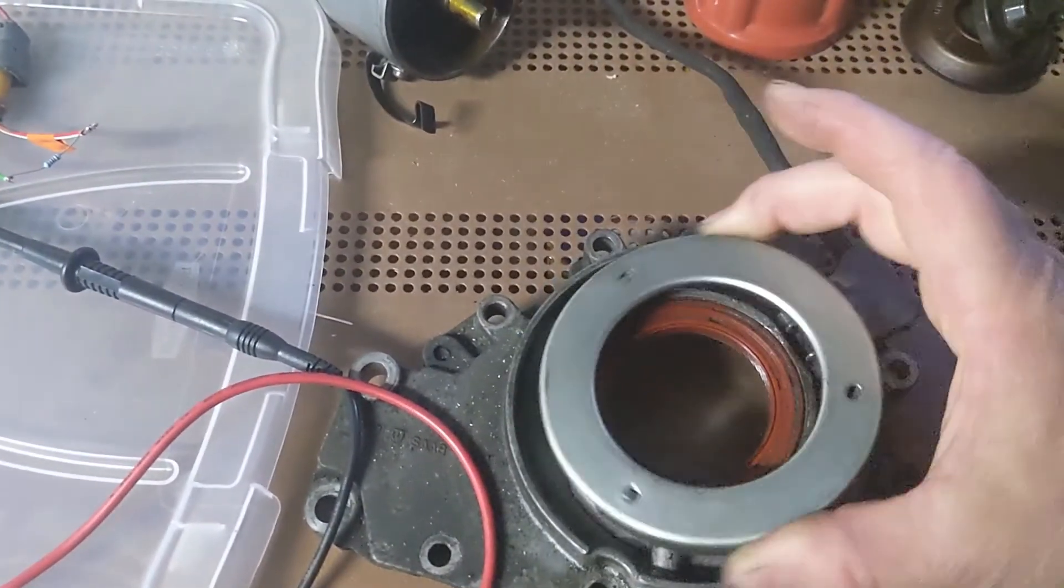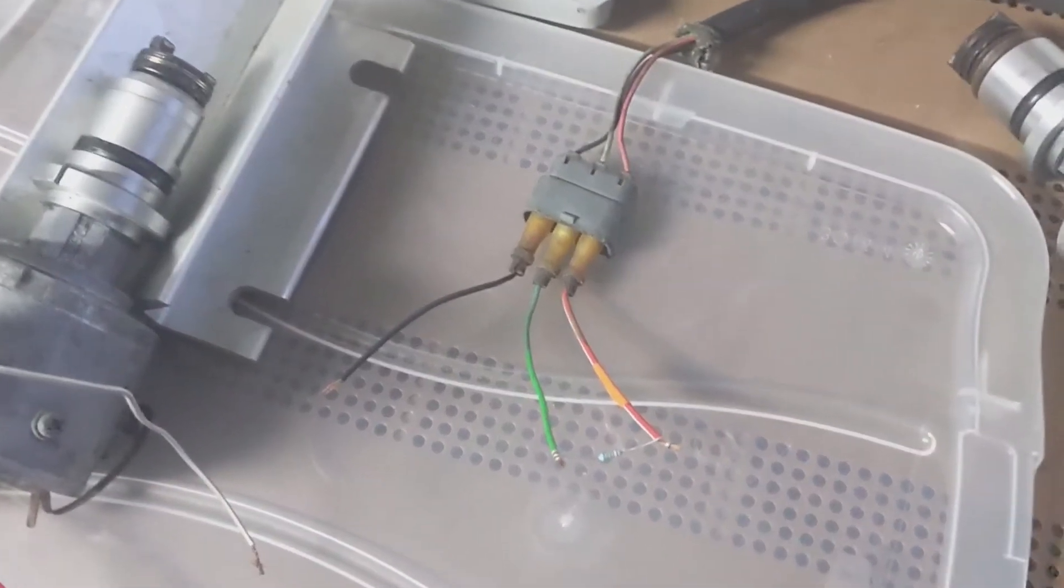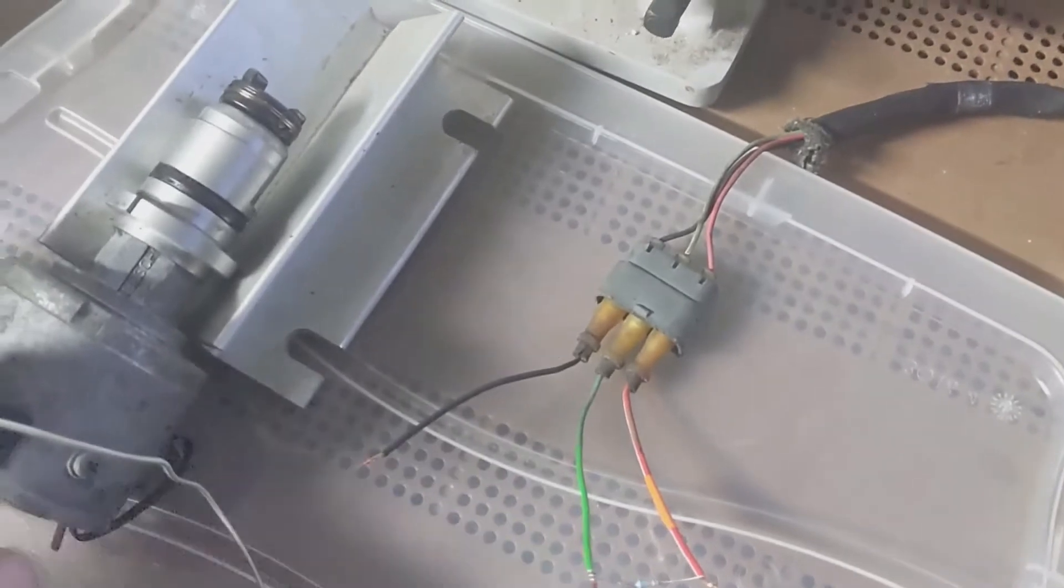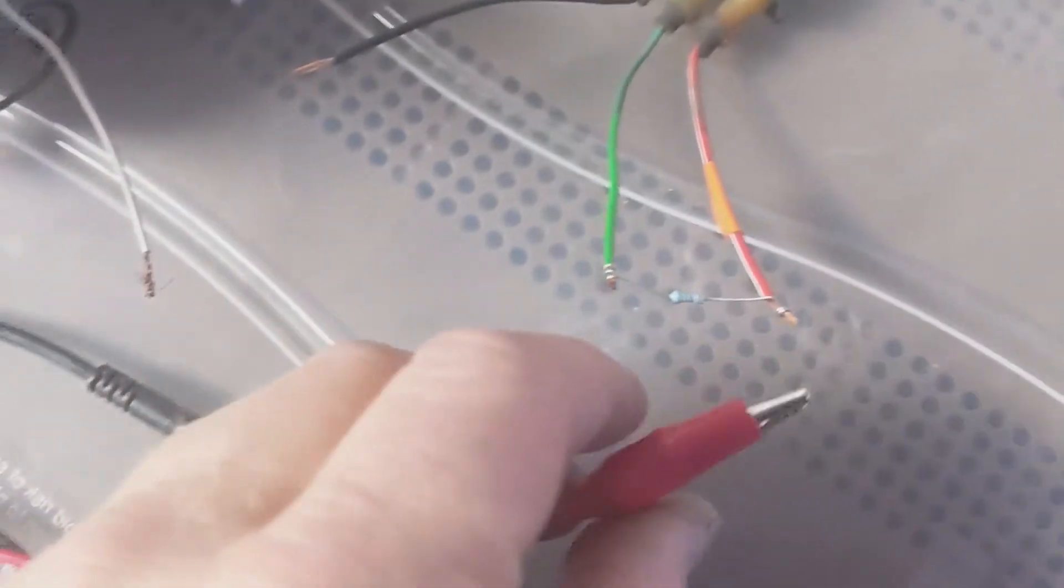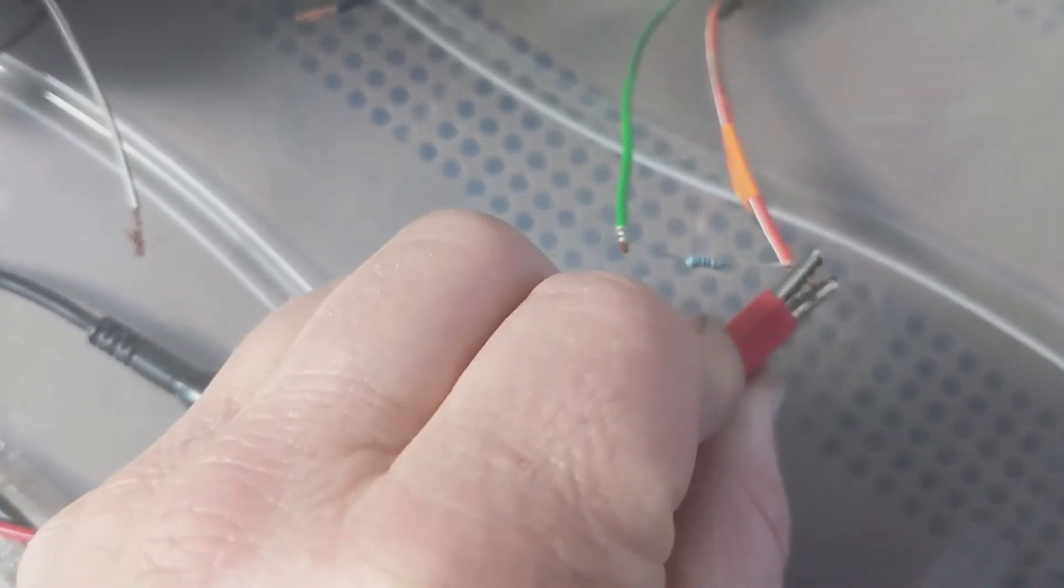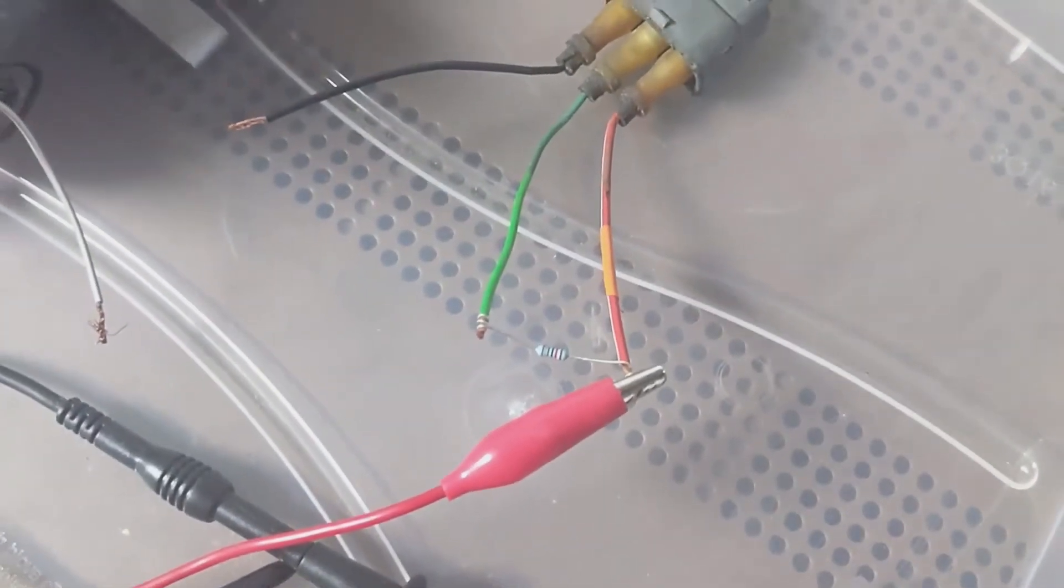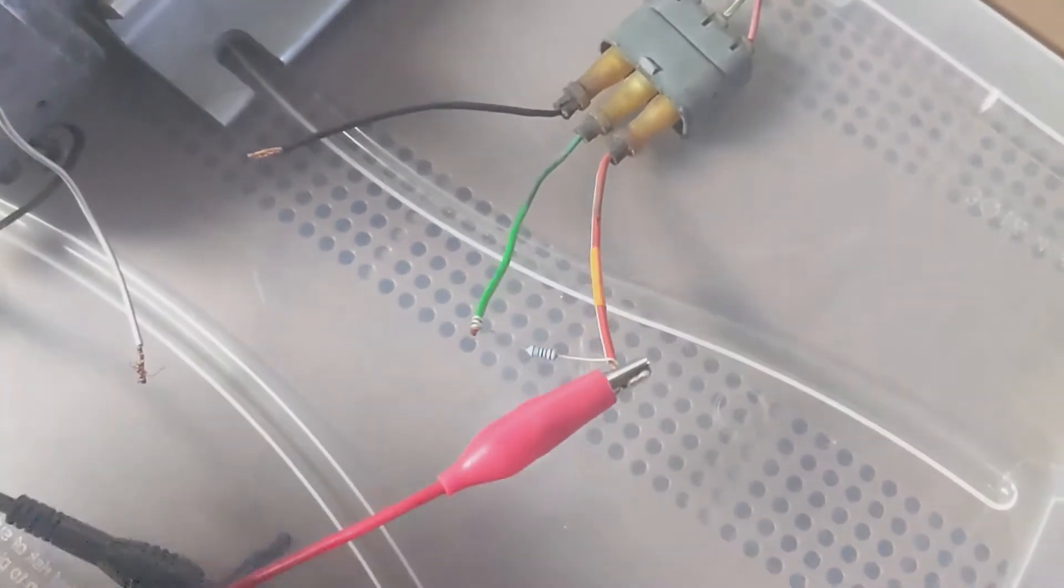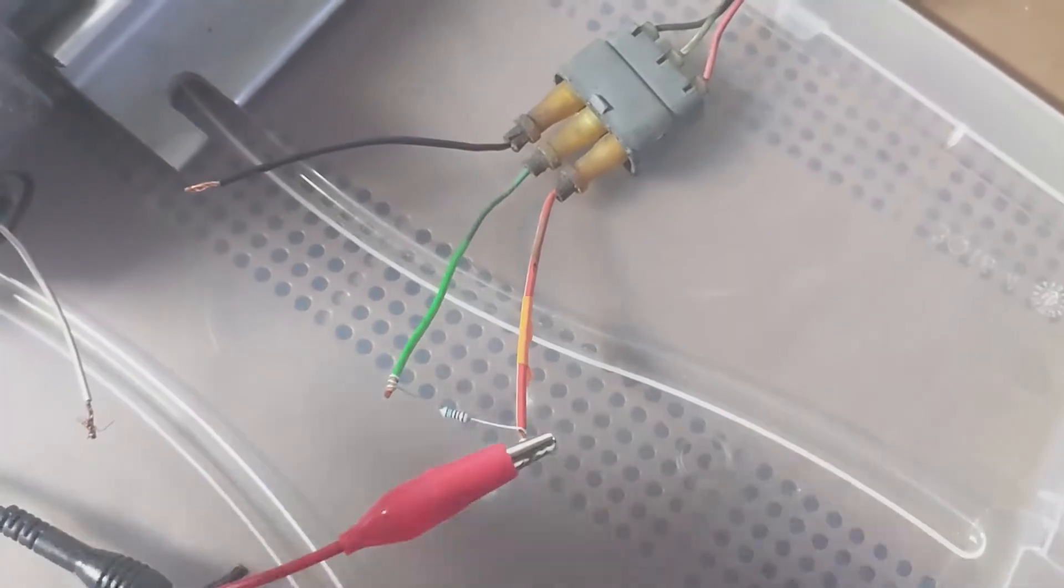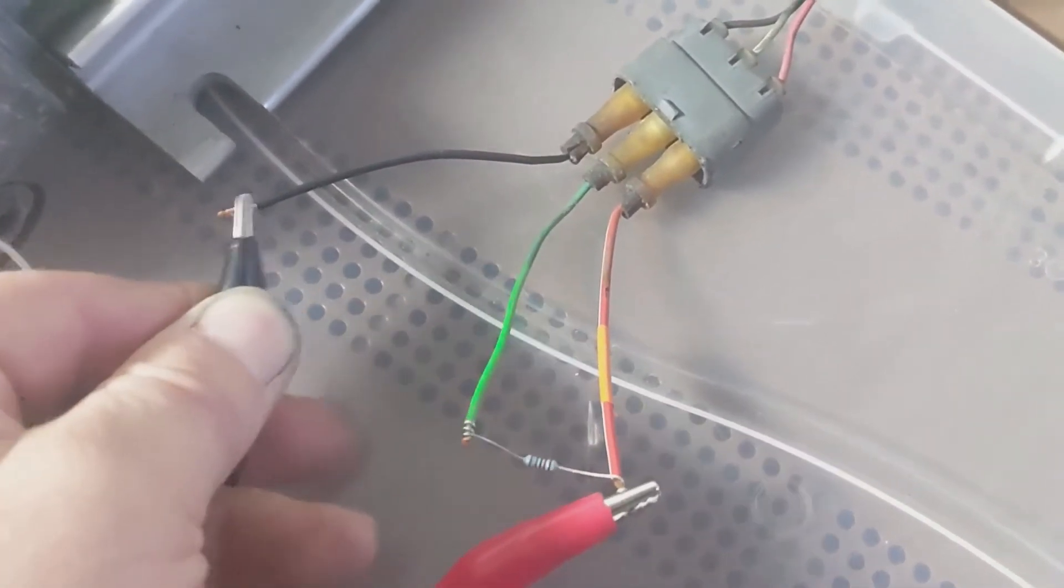So I'm going to just go ahead and set this guy right like that so it's blocking my Hall sensor. I'm going to grab my positive lead from the regulated power supply and connect it to the positive supply on the crank-mounted Hall sensor. On these guys, the positive supply is going to be red. Then I'm going to grab the ground from my regulated power supply and connect it to the ground of the crank-mounted Hall sensor, which is black.